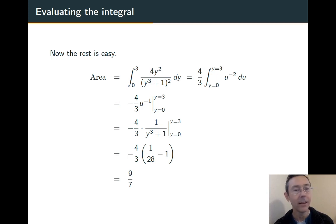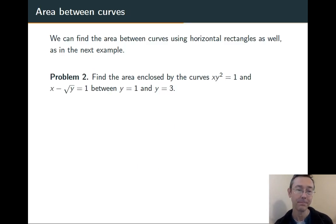Notice we got a positive answer at the end. That should always happen when you're doing an area. If you get a negative number, you did something wrong, like confusing the top curve and bottom curve, something like that. Okay, so we're supposed to be talking about areas between curves, not just under a curve. So let's do an example like that.